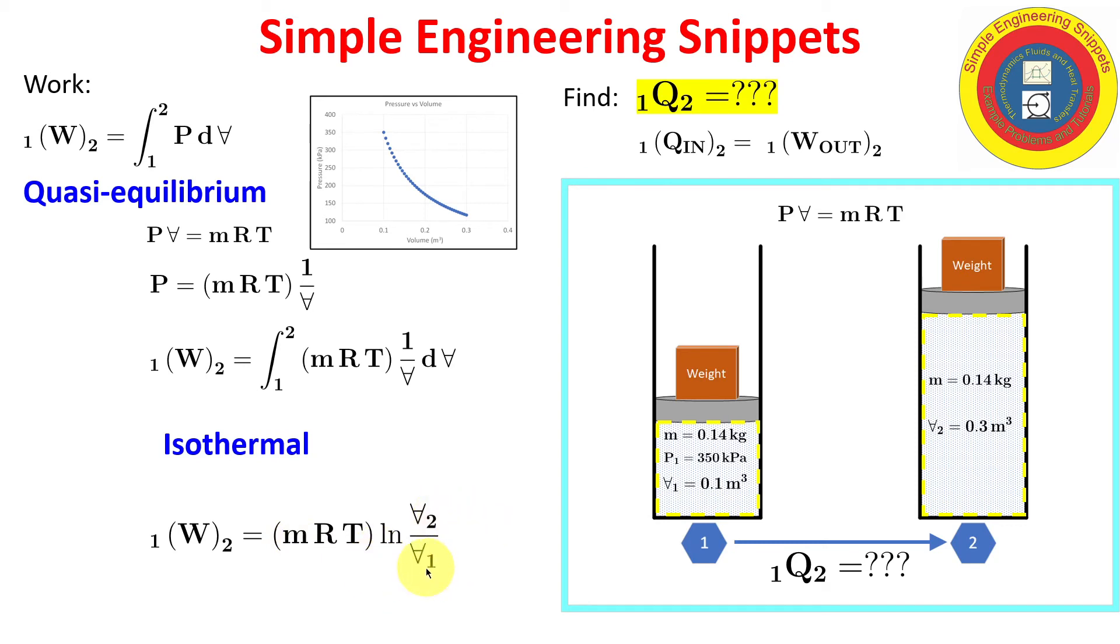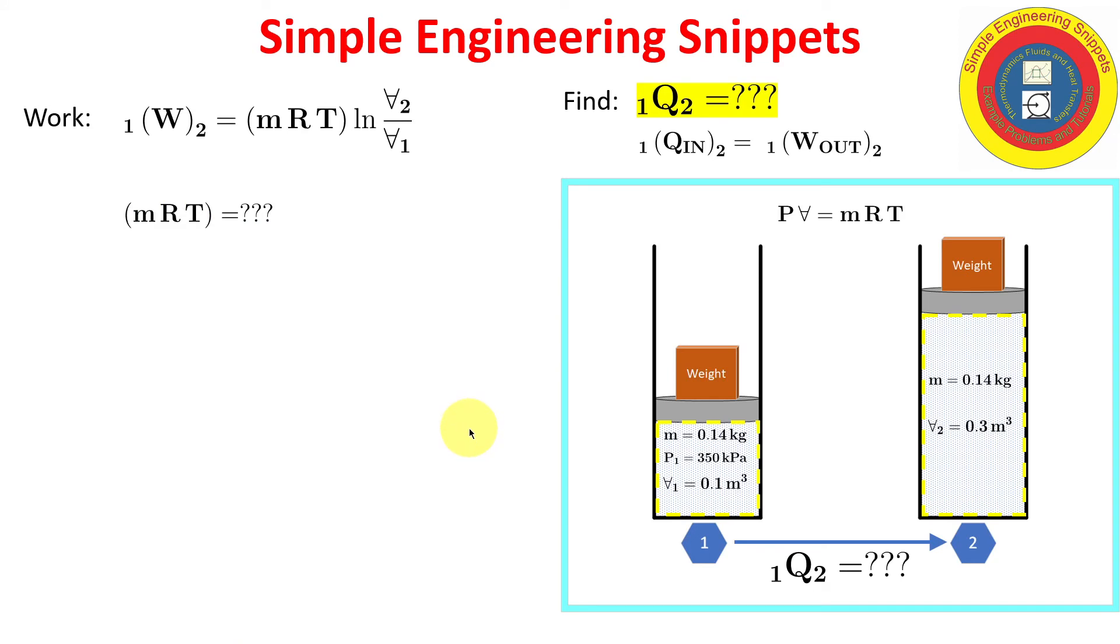And we have volume 2 over volume 1, so let's see if we can find this product MRT or at least a workaround. Well, we know the temperature is constant. We know what the temperature is. Maybe we could get clever and look up an ideal gas constant, but it turns out we don't really need that because we know that MRT is equal to pressure times the volume. We also know it's constant, as we stated earlier, and we know the pressure and volume at state 1. So we can substitute that into our equation for work, and there we go.